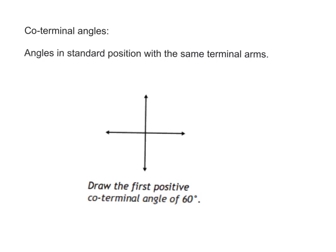Coterminal angles. Coterminal angles are angles in standard position with the same terminal arms. And it says draw the first positive coterminal angle of 60 degrees. And I have these in degrees because I know you're still better at probably thinking in terms of degrees than radians.